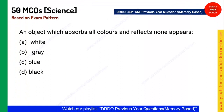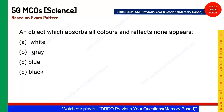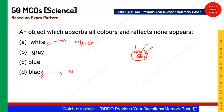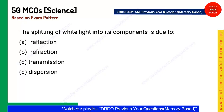Next question: Which object absorbs all colors and reflects none? The answer is a black-colored object. We wear black clothes in winter because black absorbs all radiation, giving a feeling of heat. We wear white clothes in summer because white reflects the most. Similarly, a black hole captures everything inside it. The correct answer is option D.